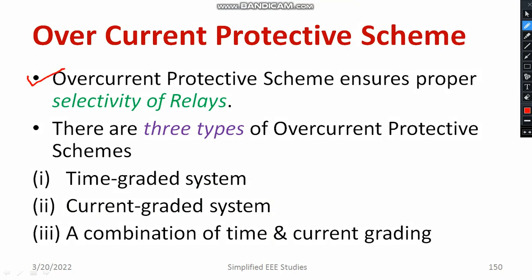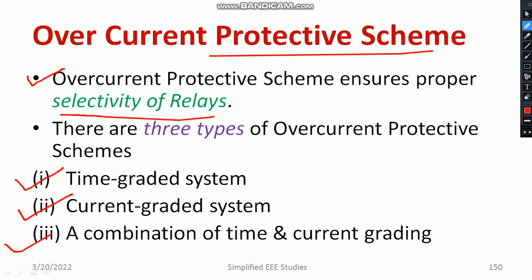Looking at overcurrent protection: the overcurrent protective schemes ensure the proper selectivity of relays. Selectivity is one of the very important parameters, so the real fault needs to be identified by the relays. The three types of overcurrent protective schemes are the time graded system, the current graded system, and a combination of time and current grading systems.